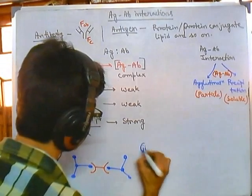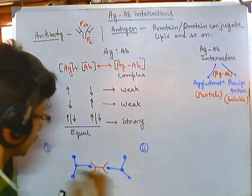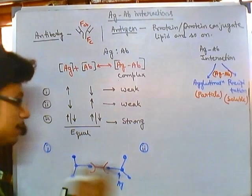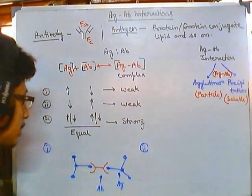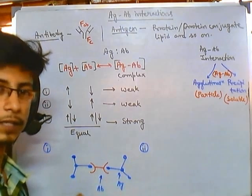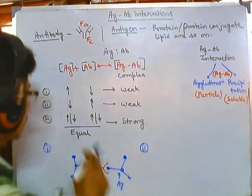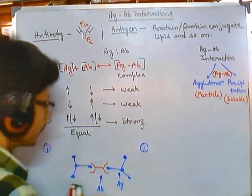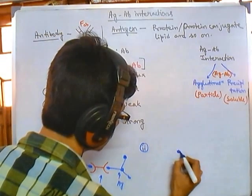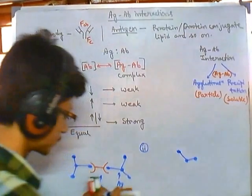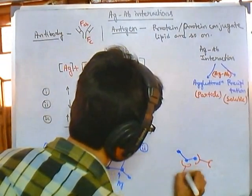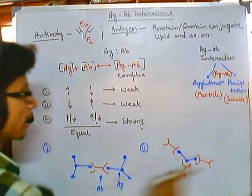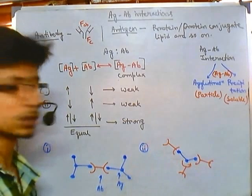Now in scenario two, if we have less antigen and high concentration of antibody, then we have a lot of antibody. Say this is our antigen and we are having a huge amount of antibody surrounding it. So with high concentration of antibody and less concentration of antigen, we again get a weak complex — the antigen is overwhelmed by antibodies.